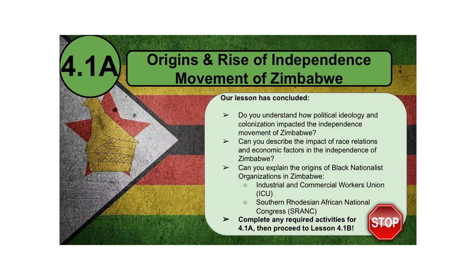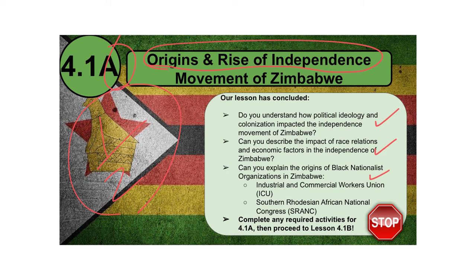Our lesson has concluded for the Origins and Rise of Independence Movement Part A, to be continued in the second half. Take a moment to think about what we've covered: Do you understand how political ideology and colonization impacted Zimbabwe's independence movement? Can you describe the impact of race relations and economic factors? Can you explain the origins of black nationalist organizations like the ICU and S-RANC? If so, pat yourself on the back. Complete any activity for Lesson 4.1A and then proceed to 4.1B.